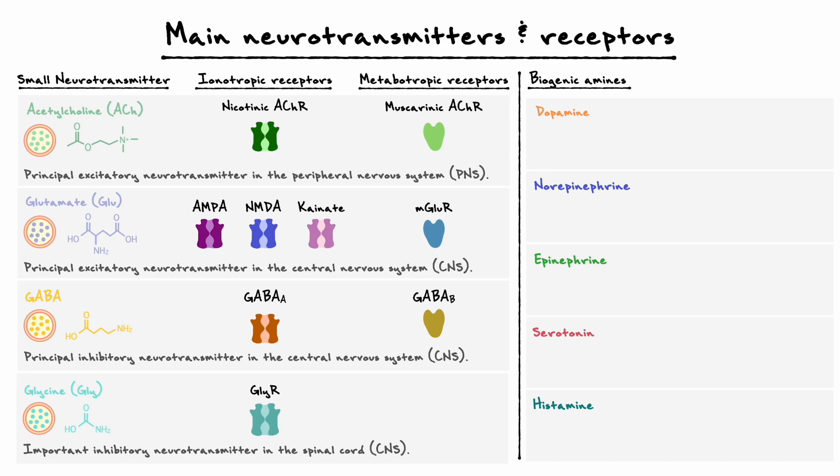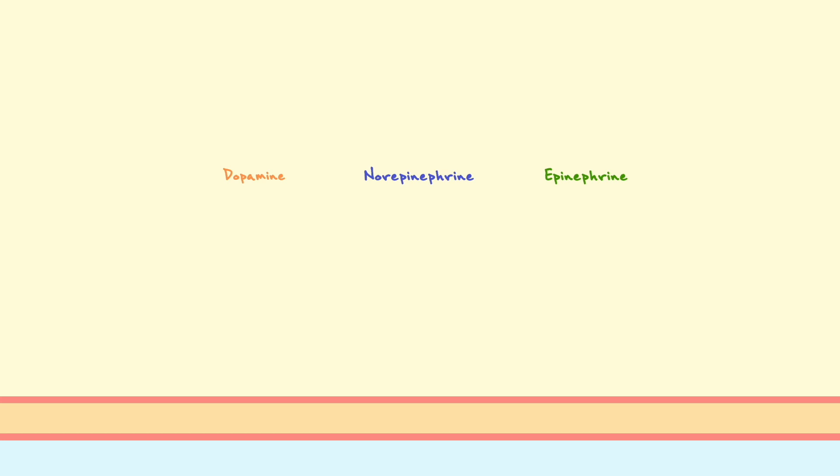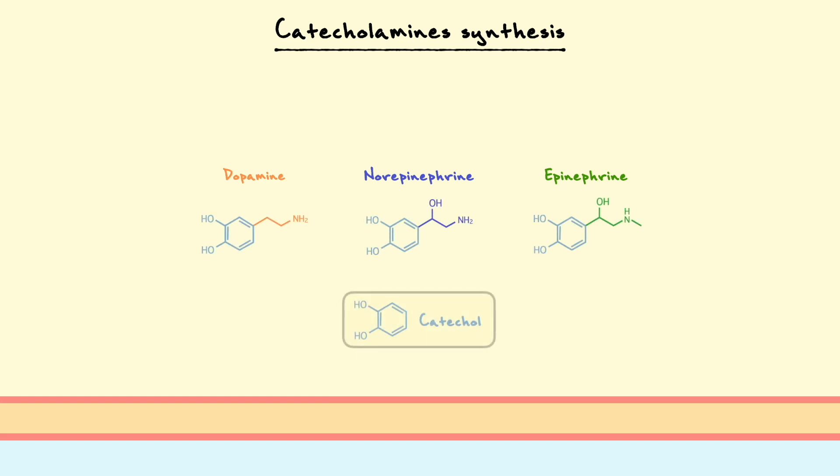Let's begin with the first three: dopamine, norepinephrine, and epinephrine. Together, these three neurotransmitters form what are called the catecholamines. The name catecholamines comes from their structure, which all three have a catechol moiety—essentially a benzene ring with two alcohols—and the amine comes from the fact that they all have an amine group attached to the ring.